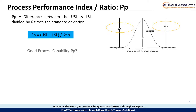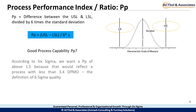What is a good process capability number? According to 6 Sigma, we want a PP of above 1.5 because that would reflect a process with less than 3.4 DPMO — the definition of 6 Sigma quality.